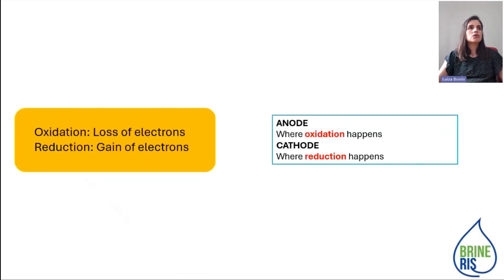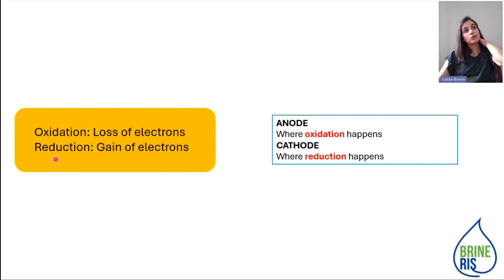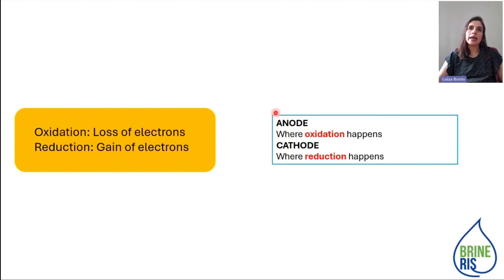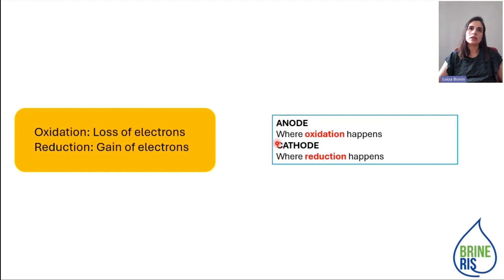So, just remembering the concept: we have oxidation and reduction. Oxidation is where you lose electrons and reduction is where you gain electrons. The oxidation happens in the anode and the reduction happens in the cathode. If you want to remember, the two vowels go together: anode and oxidation. And the two consonants: cathode and reduction. You can create different memory methods, or you can just take a note.